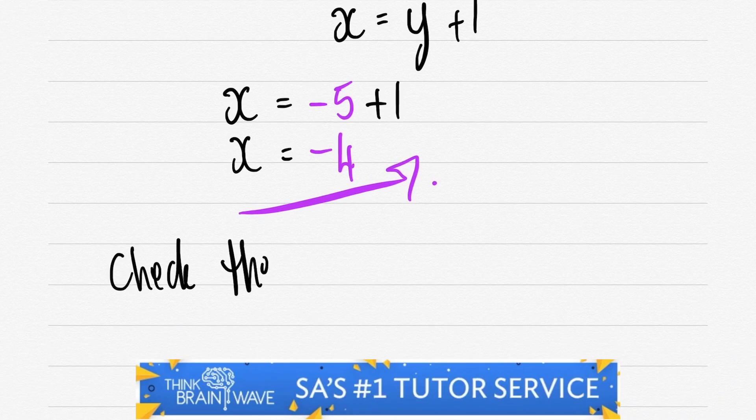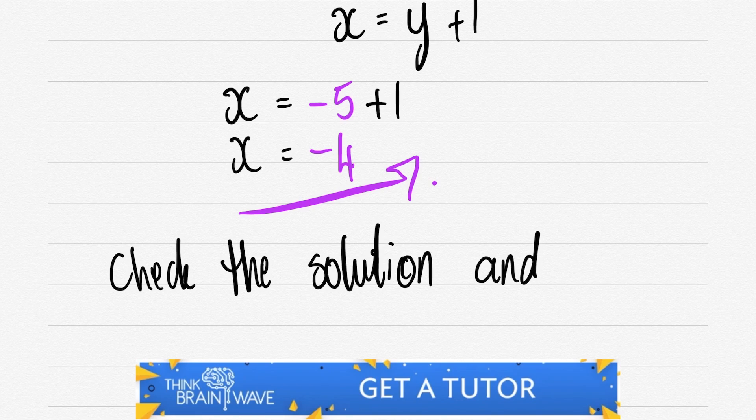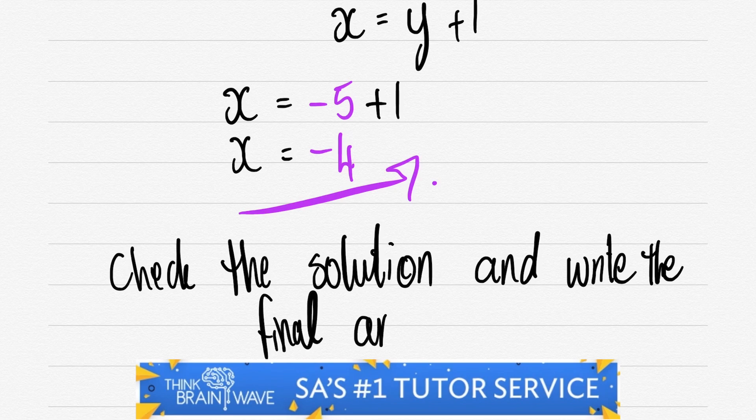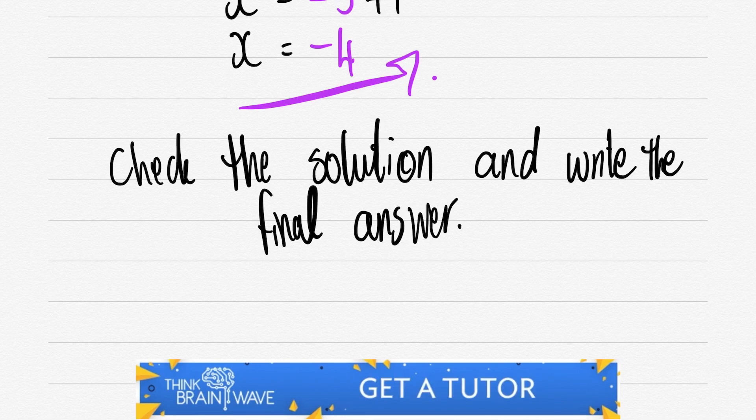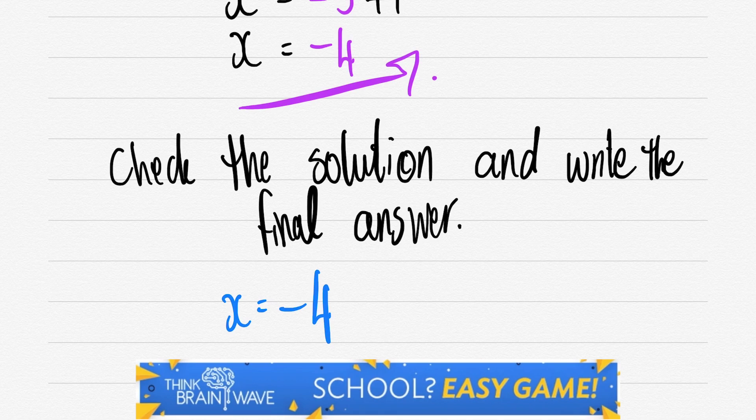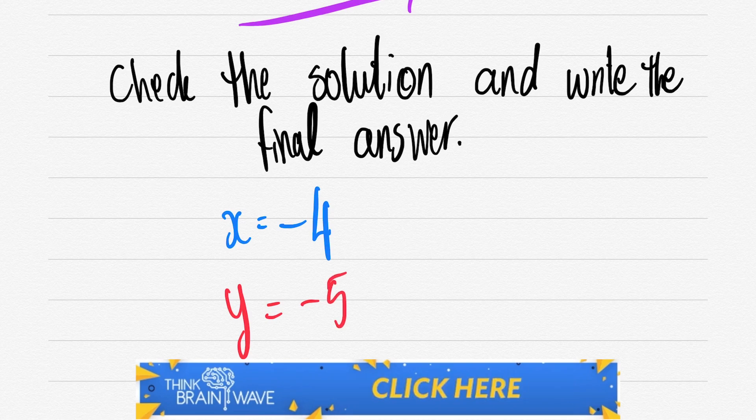We can now check our answer. So let's check our solution. And then we will write the final answer down. Lovely. Let's move forward. We say x = -4 and y = -5. Easy game.